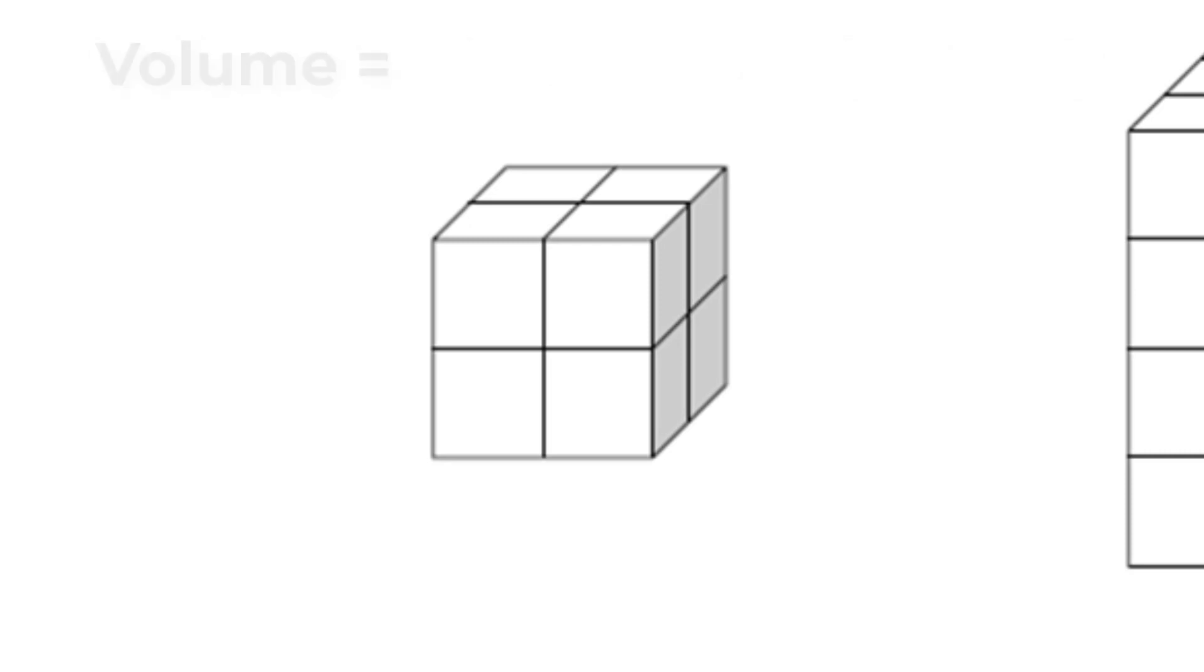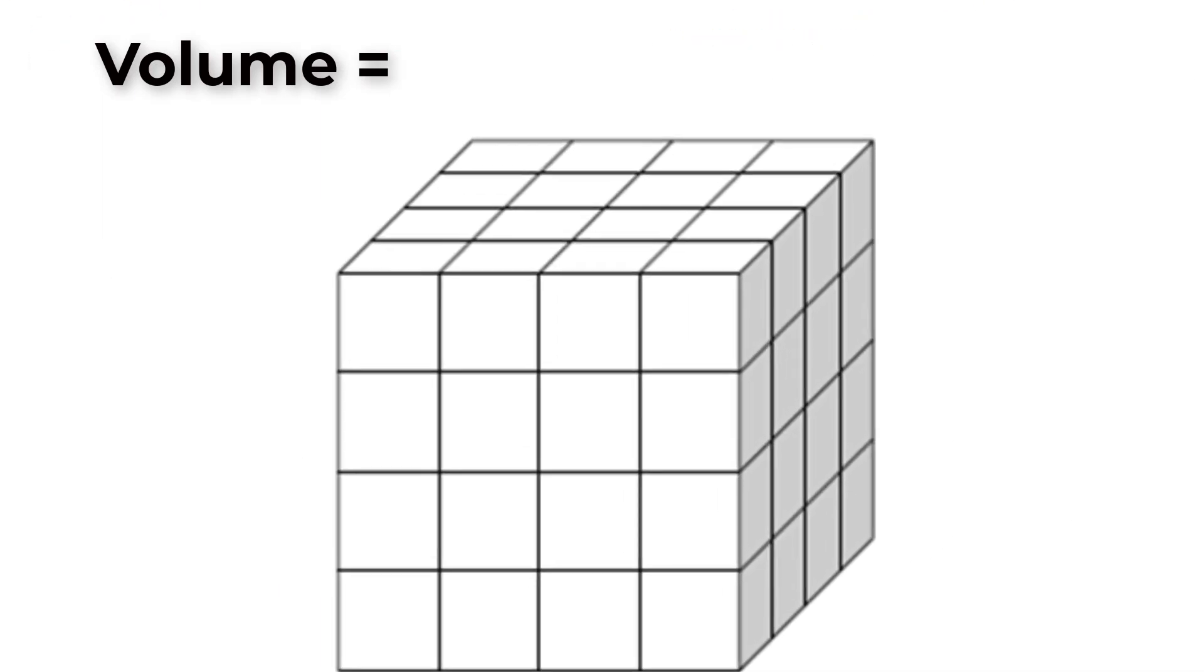For Figure B, the volume of the cube is calculated by multiplying the height, which is four blocks, times the width, which is four blocks, times the length, which is four blocks. This gives us a volume of 64 blocks.